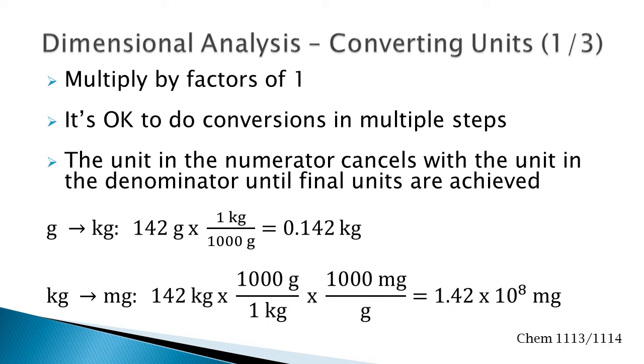Then you'll multiply by a factor of 1. We know that there's 1 kilogram for every 1,000 grams. The gram unit in the numerator and denominator cancel out, leaving only kilograms.